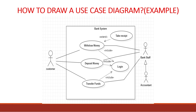This means the customer performs all three functions: withdraw money, deposit money, and transfer money. All three use cases have an include relationship with login, meaning they cannot be performed without logging in first. Login is necessary — without it the system will not work. There is also an exclude relationship of 'take receipt' with withdraw money, meaning the customer has a choice to take a receipt or not, and this will not harm the system.